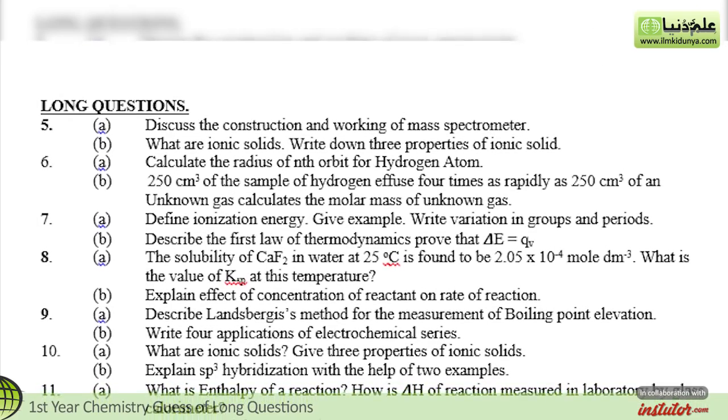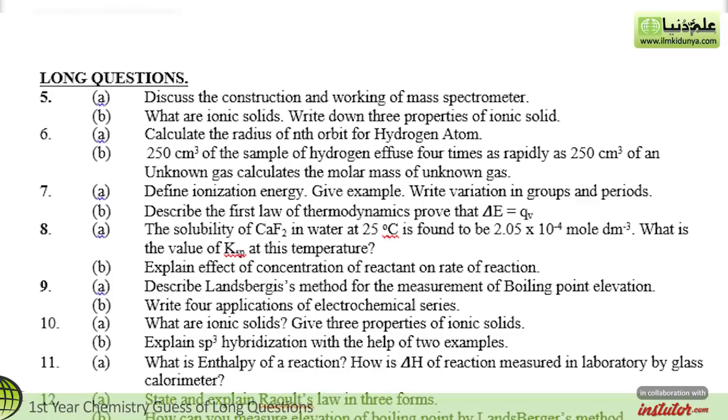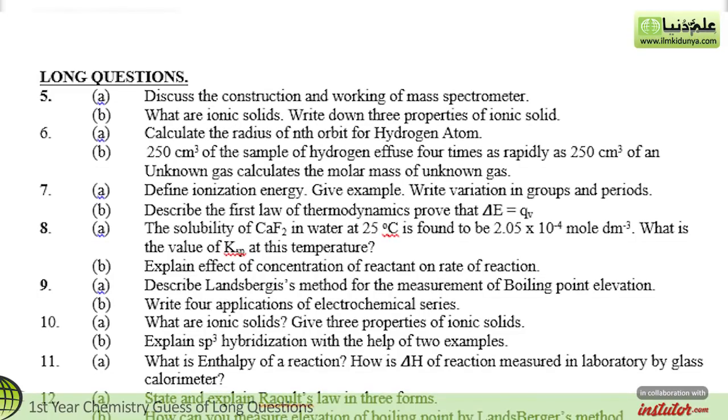First, you will see question number 5. You have a statement: Discuss the construction and working of mass spectrometer. This is also a long question. What are ionic solids? Write down three properties of ionic solids. Question number 6.